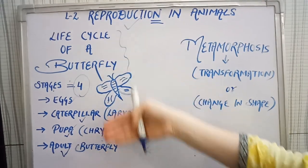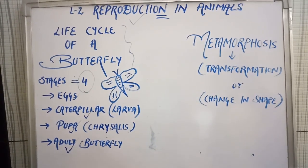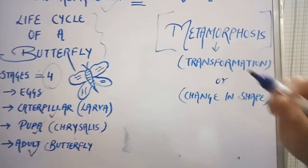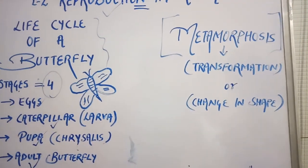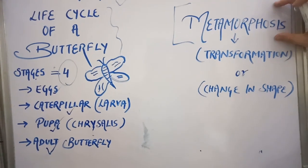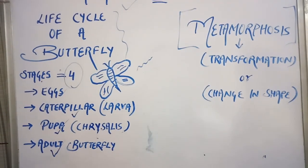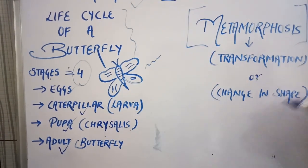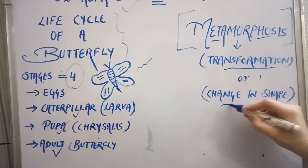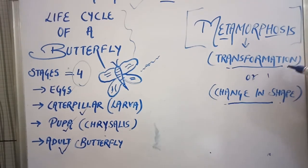Each stage has a different goal. This life cycle is known as metamorphosis. Metamorphosis is a biological process — a natural biological process. A change in the form or character of an animal during its life cycle is called metamorphosis. The basic meaning of metamorphosis is transformation, or change in shape of a particular thing — the transformation of a butterfly.